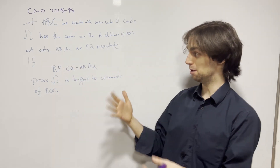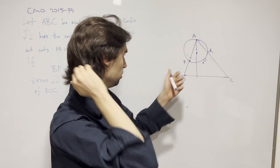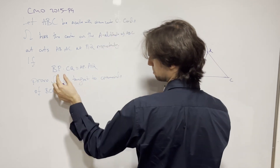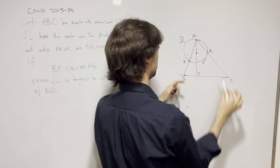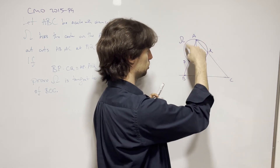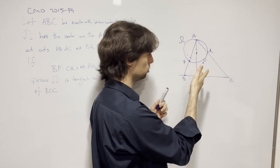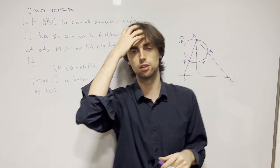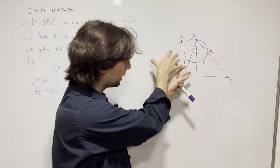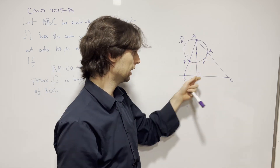Draw the diagram, put your first ideas on paper, and look at what the problem is asking. Without further ado, let's begin. Let's draw the diagram. We have a circle with its center on the A-altitude in triangle ABC, cutting it at points P and Q. We have the condition BP times CQ equals AP times AQ. The center is here, and we need to prove that the circle through B, O, C and this circle are tangent to each other. Note that O is introduced at the end almost as an afterthought.